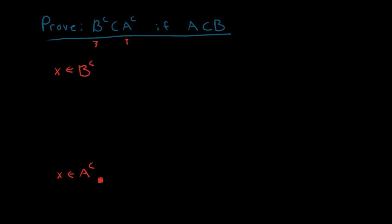The only thing that I know currently is that X is inside of B complement. When I say X is inside of B complement, what does that mean? That is going to imply that X is not an element of B — it is not inside of B. This is just the definition of being in B complement: it means that it is not inside of B.